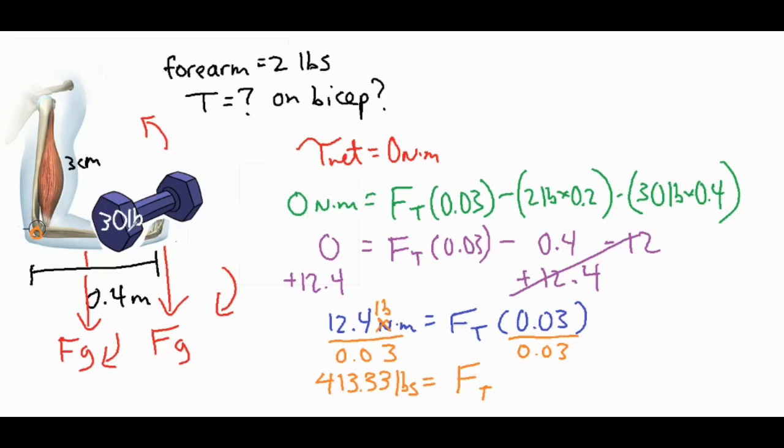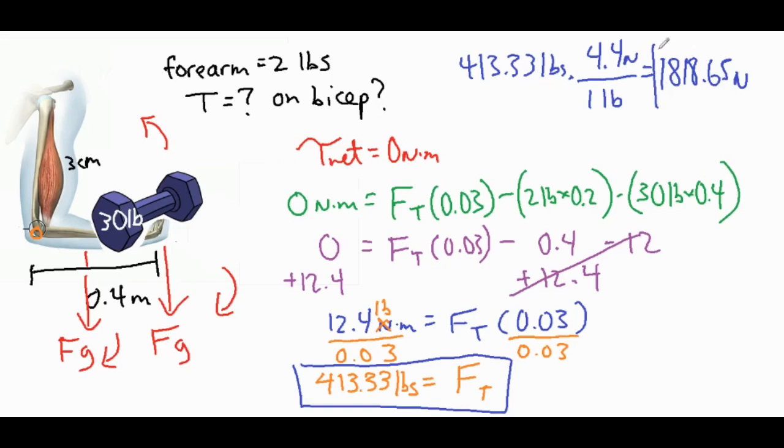Now if we took that force and converted it, we can go ahead and see what that looks like in newtons as well. So if we took the 413.33 pounds, and then we say one pound is equal to 4.4 newtons and we multiply those out, then we get 1818.65 newtons. So that gives us two answers in different units which are the same value if we're actually talking about the amount of tension.